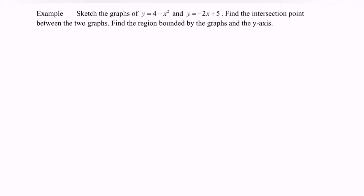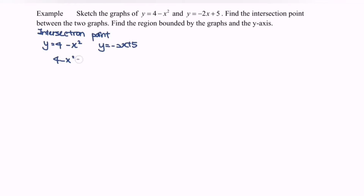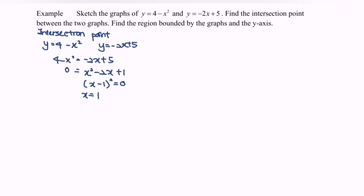My first step would be to find the intersection point between the two graphs. Setting y equals 4 minus x squared equal to y equals negative 2x plus 5, so 4 minus x squared equals negative 2x plus 5. Rearranging gives x squared minus 2x plus 1 equals 0. Factorizing, we have (x minus 1) squared equals 0, so x equals 1. We have two equal roots. Substituting x equals 1 gives y equals 3, so the intersection point is (1, 3).